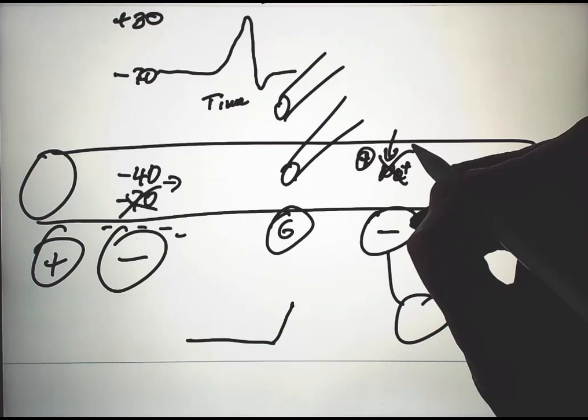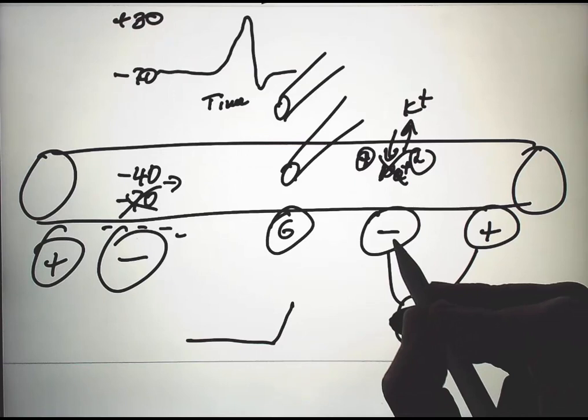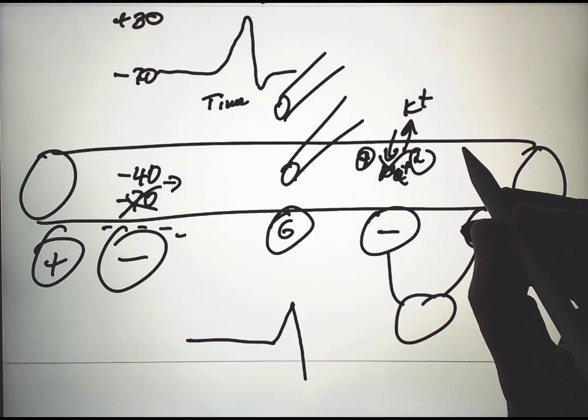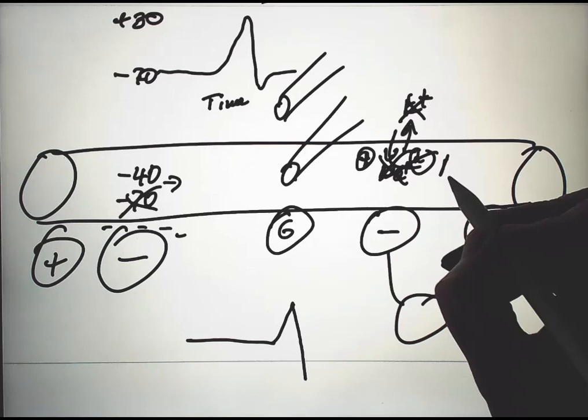Then the next step is voltage-gated potassium channels open and potassium leaves this electrode. That makes the outside more positive, and so we see a downward deflection. Then the action potential passes, so now these gates are all reset.